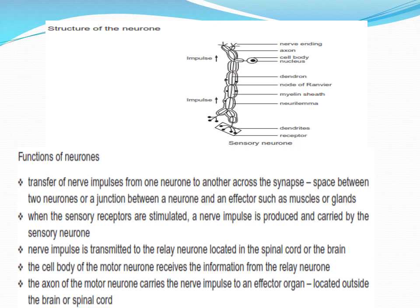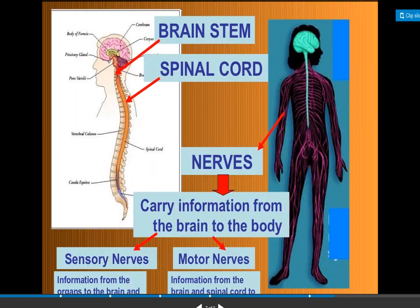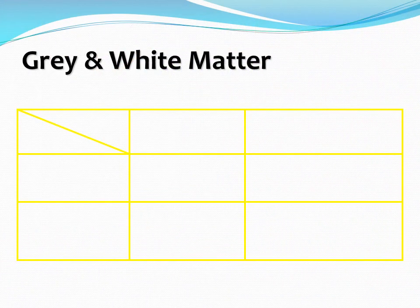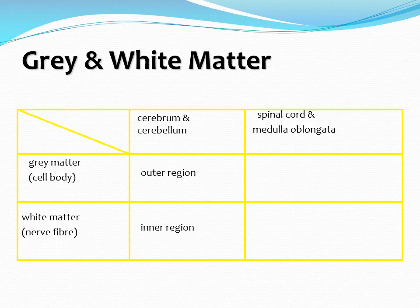When sensory receptors are stimulated, a nerve impulse is produced and carried by the sensory neuron. The impulse is transmitted to the relay neuron located in the spinal cord or brain. The cell body of the motor neuron receives information from the relay neuron. The axon of the motor neuron carries the nerve impulse to the effector organ. You can see in this diagram the spinal cord arising from the medulla oblongata, running in the vertebral column, with nerves carrying information. Sensory nerves carry information from organs to the brain; motor nerves carry information from the brain to the body. In the cerebrum and cerebellum, gray matter is the outer region and white matter is inner, while in the spinal cord and medulla oblongata, the inner region is gray matter and the outer region is white matter.